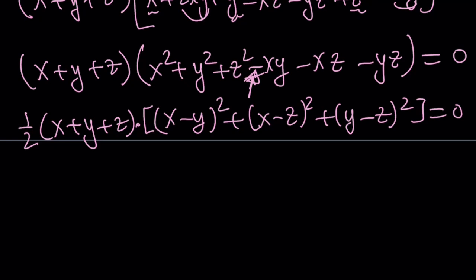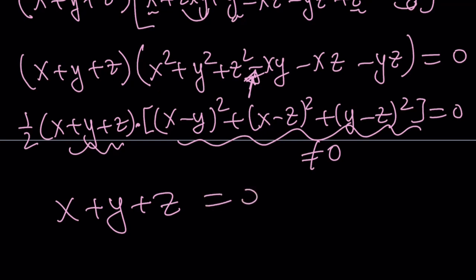And now, by setting this equal to zero, notice that this, if x and y, z are different, this is not going to be zero. Therefore, this has to be zero, which means x plus y plus z equals zero. And this brings us to the end of this video.